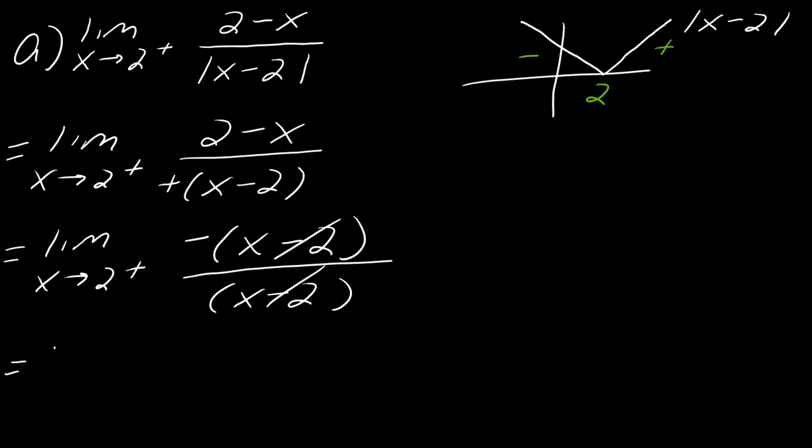And so now I've got this and now I can actually do my cancellation. So I can cancel these two things out and I get the limit as X approaches two from the right of negative one. So now I can take the limit and the limit of any constant is just the constant itself. So this will just equal negative one. So we're done.